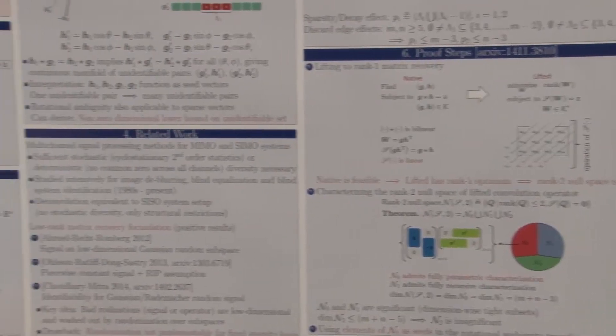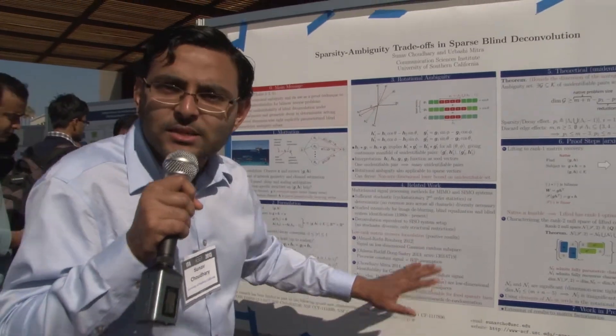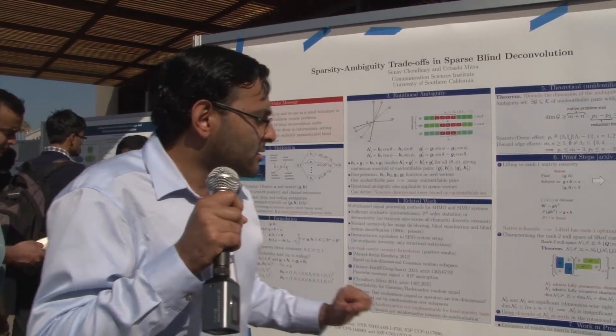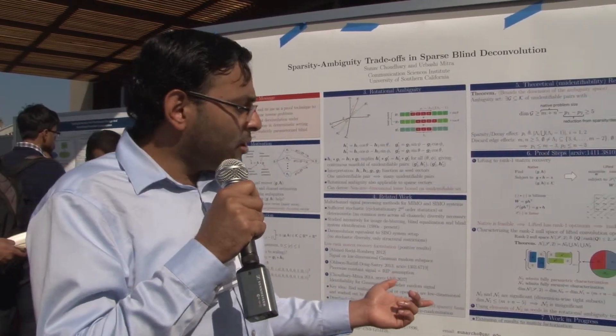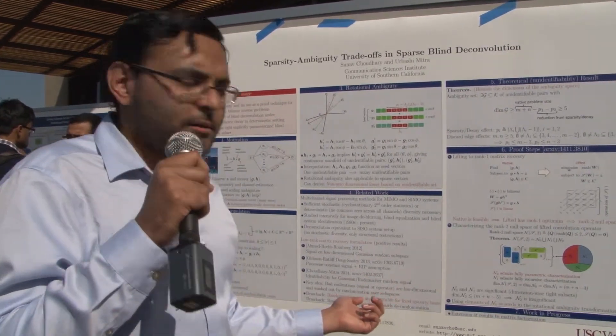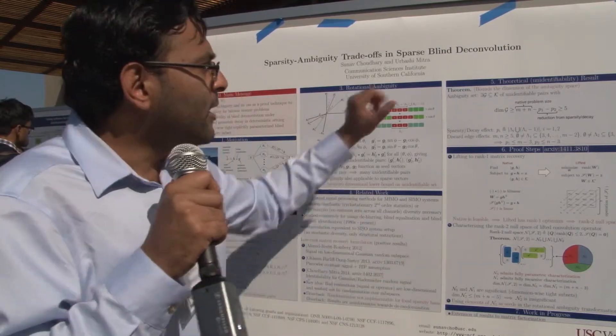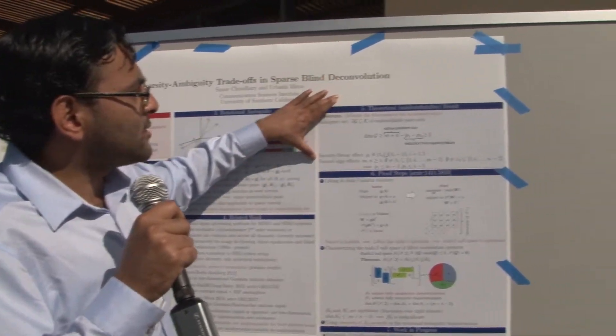The problem with this approach is that in physical settings, you cannot do randomization because your sparsity basis is fixed by nature. So we try to analyze the problem under this setting completely algebraically—we don't do random precoding.